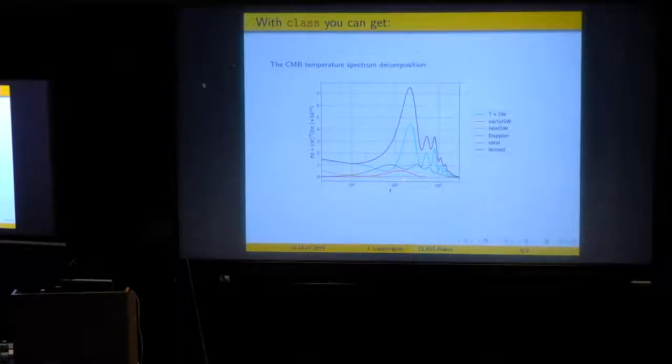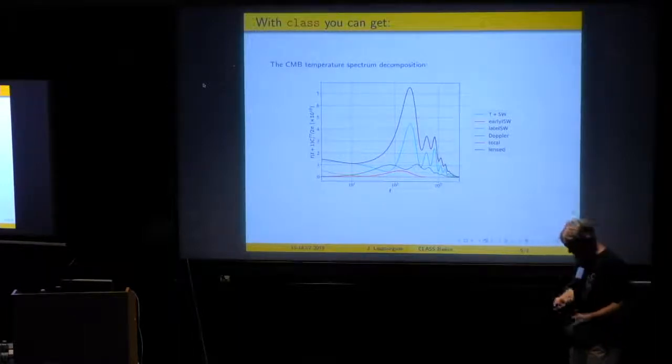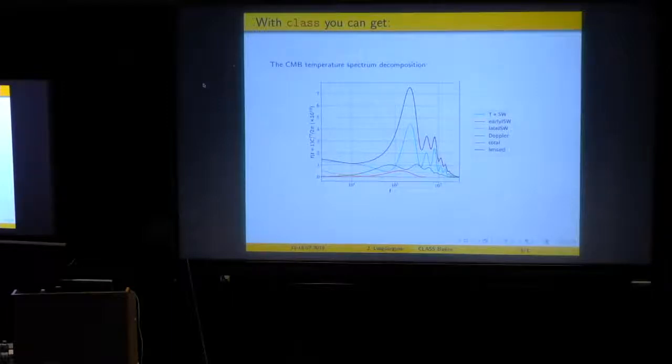You could also, for the purpose of understanding better the physics or explaining it, you could decide to break your CMB temperature spectrum in individual effects. So, for instance, to see the effect of adding or removing lensing. That's the difference between black and red. Or decompose the CLs by asking in your input file to break into a Sachs-Wolfe, early integrated Sachs-Wolfe, late integrated Sachs-Wolfe Doppler effect. There is also a polarization component, which is too small to be seen.